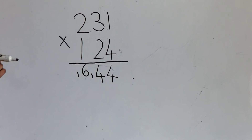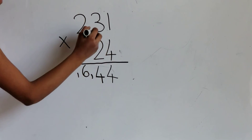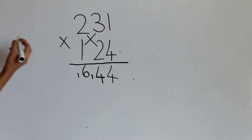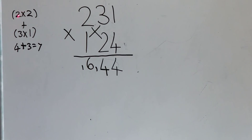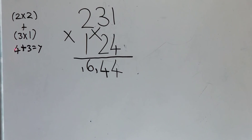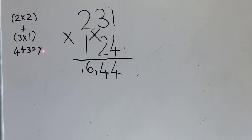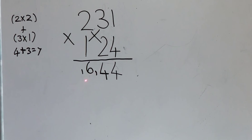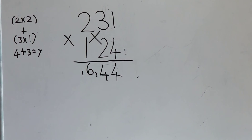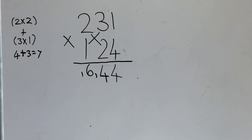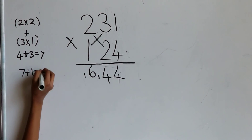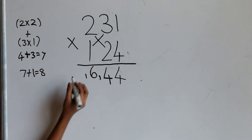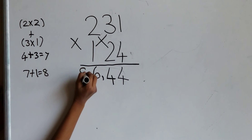Now multiply 2 times 2 plus 3 times 1. 2 times 2 plus 3 times 1 equals 7. Don't forget the carry: 7 plus 1 equals 8. Write 8 over here.